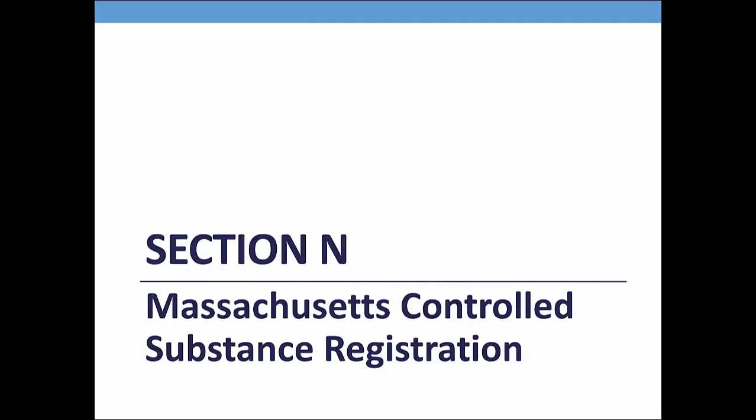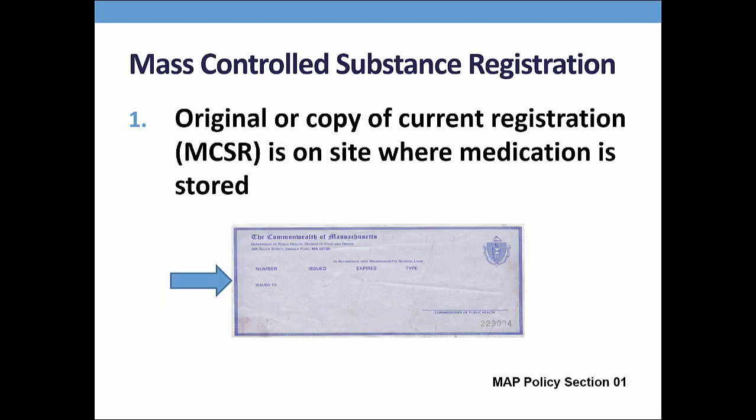If an individual's prescription plan requires that meds be filled in excess of a 37-day supply, I'll expect to see supporting documentation in the med book — acceptable supporting documentation can be a copy of the prescription plan requirement or a copy of the insurance card. Section N: Massachusetts Controlled Substance Registration. All programs that meet the criteria for site registration must apply for a Massachusetts Controlled Substance Registration or MCSR number. The same number is also referred to as the MAP number or the DPH number. The MCSR is kept at each site where meds are stored, allows meds to be stored and certified staff to administer meds in a MAP program, and must be renewed yearly.